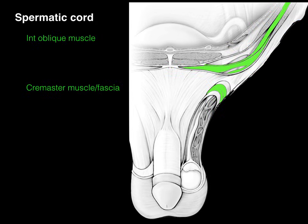The next layer is the internal oblique muscle and associated fascia. It courses down and becomes the cremasteric muscle and associated fascia. This is skeletal muscle — it contracts to pull the testis closer to the body and relaxes to allow it to go farther away. Body temperature is 37°C, but sperm needs to mature at 34°C, which is why the testis is outside the body. If outside temperature drops — such as going into very cold water — the cremasteric muscle pulls the testis closer to the body wall to maintain temperature.